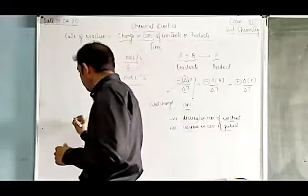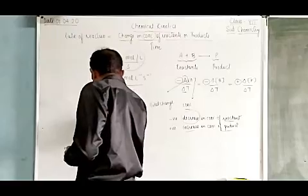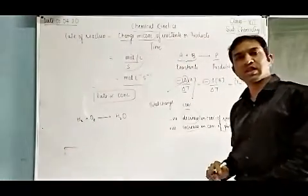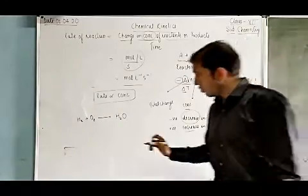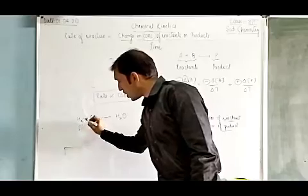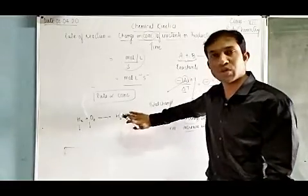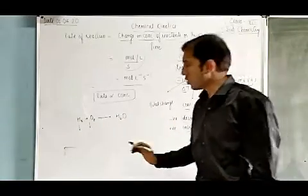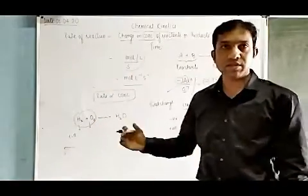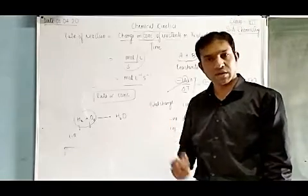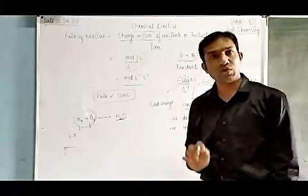Suppose H₂ plus O₂ gives H₂O. In this reaction H₂ and O₂ are the reactants and H₂O is the product. Whenever the concentration of hydrogen and O₂ decreases, the formation of water takes place. When time equals zero, the concentration of reactant is present, and the concentration of product is also zero. As time passes, the concentration of reactant decreases.